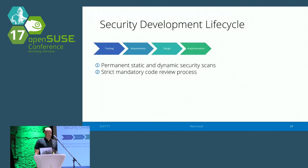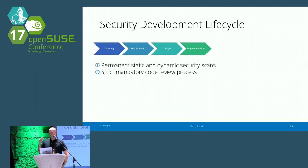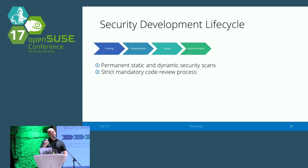Another very important thing is the code review process. Absolutely no one in Nextcloud can just commit code directly — that is not possible. We have a process, also for QA reasons, where code needs to be reviewed by other people, and this is mandatory. You can be the most senior developer; you're still not allowed to change anything directly. We require that two other people review the code, so overall there are six eyes looking at every piece of code.